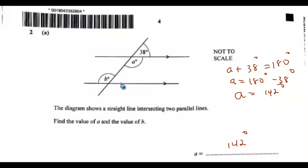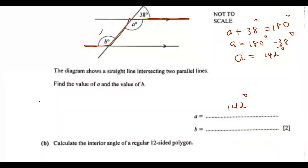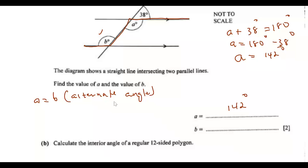To get the value of b, you can make yourself a letter Z — it has alternate angles. Angle b and angle a are alternate angles, so we can say a equals b as alternate angles. Therefore b equals 142 degrees.